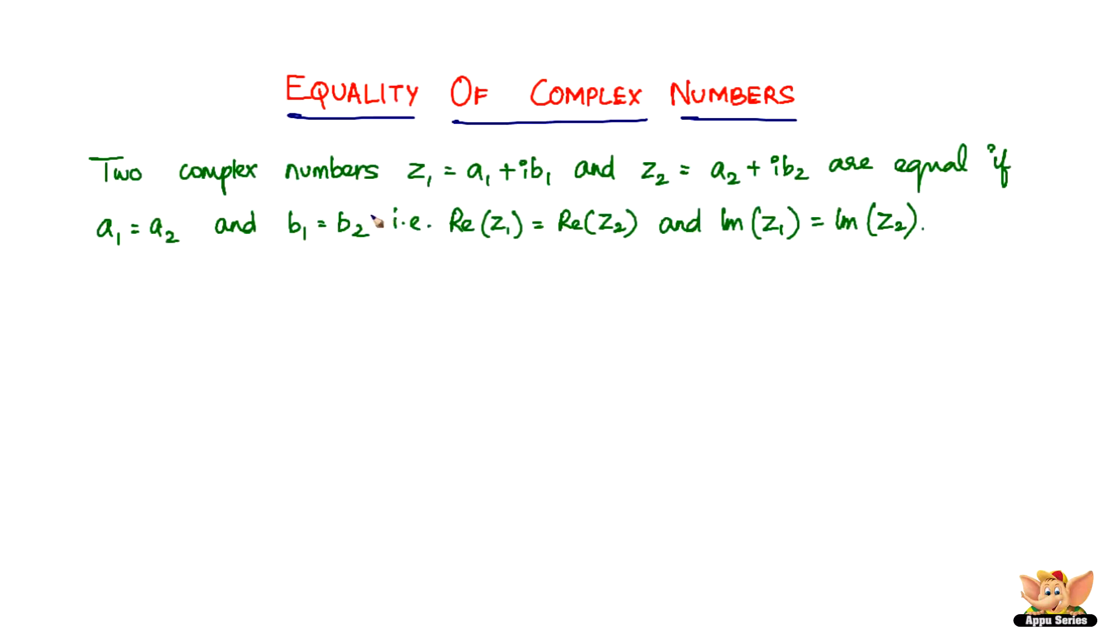Here we've got an explanation on what is the equality of complex numbers. It says that two complex numbers z₁ = a₁ + ib₁ and z₂ = a₂ + ib₂ are equal if a₁ = a₂ and b₁ = b₂.